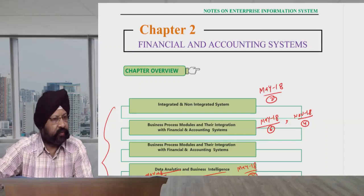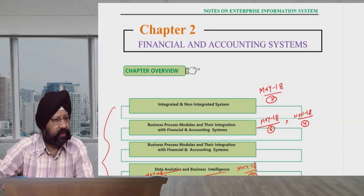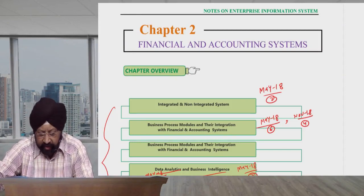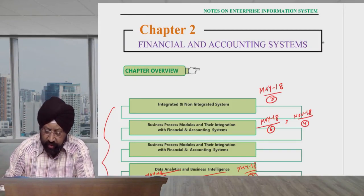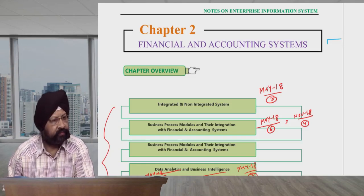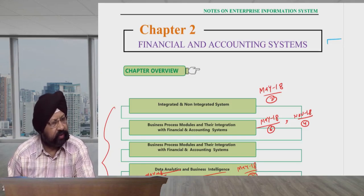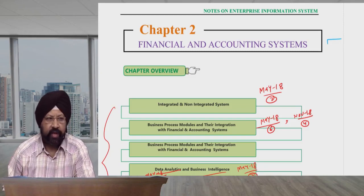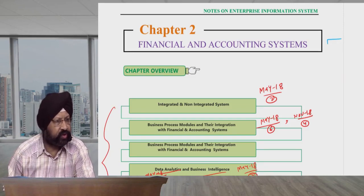After finishing chapter 1 on MCQ-based revision of automated business processes, we are moving to the next unit. The chapter is Financial and Accounting System. We will revise the whole chapter, take our time, and prepare everything for MCQ-based questions and big questions.